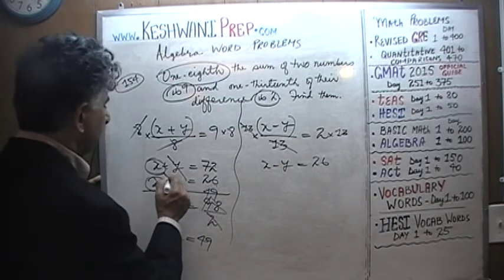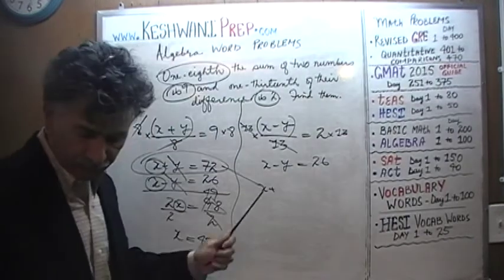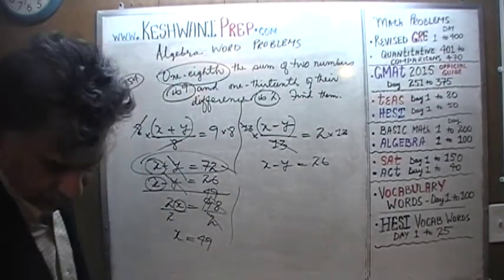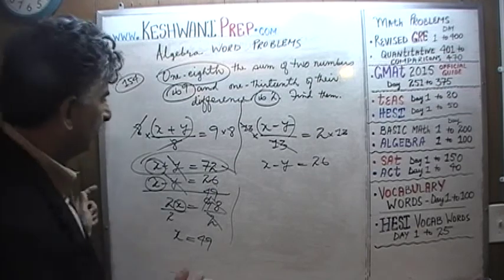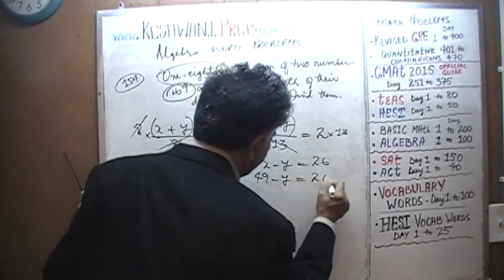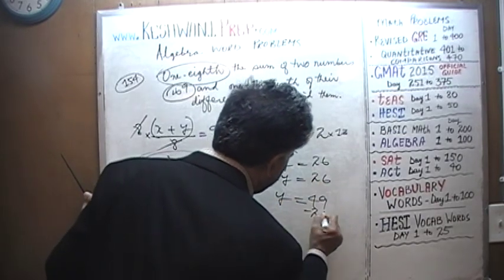Let's just use the first equation. We can just use right here. X we just found out is 49, so 49 minus Y equals 26, which means Y must be 49 minus 26.